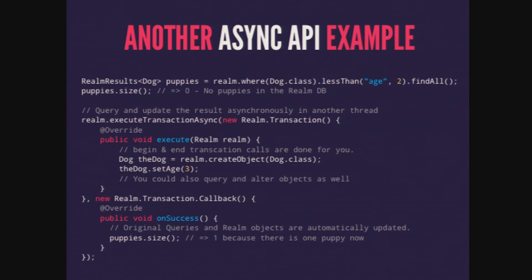Here's another async example. We have a list of dogs — puppies.size() equals zero, no puppies in the database. We can query asynchronously in another thread, and we may want to execute an asynchronous transaction to write to the database in another thread. We create the dog, set the age to 3, and commitTransaction is called automatically. There's an onSuccess callback where puppies.size() has been incremented to 1 because everything is auto-updating. There's also an onError callback you should implement, otherwise you'll get weird errors you don't understand.